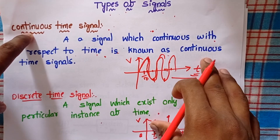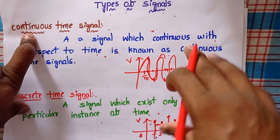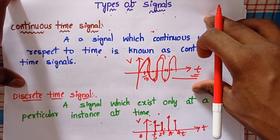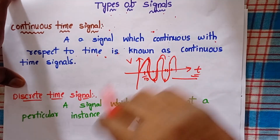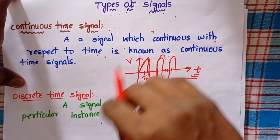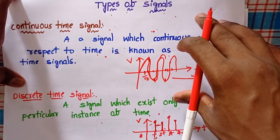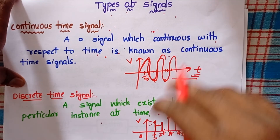I hope you have understood. This is about the types of signals — that is continuous time signal and discrete time signals. If you like this video, please click on the like button and subscribe. Hit on the bell icon. Thank you for watching this video.